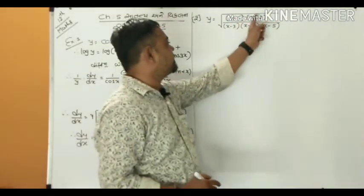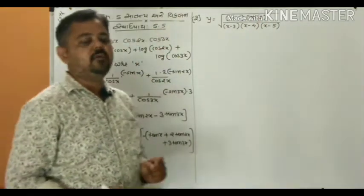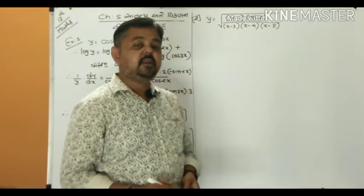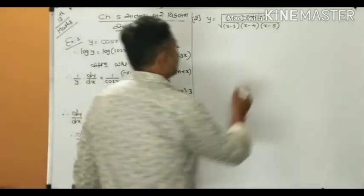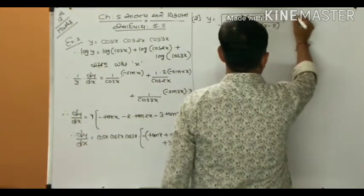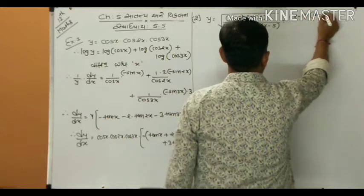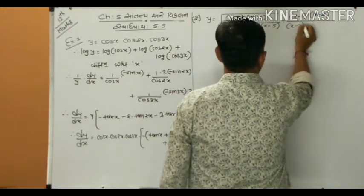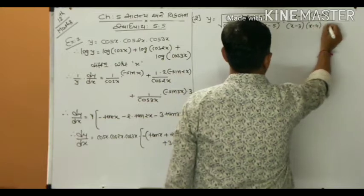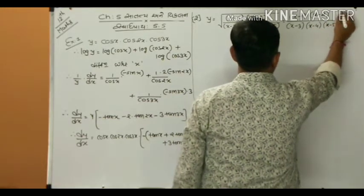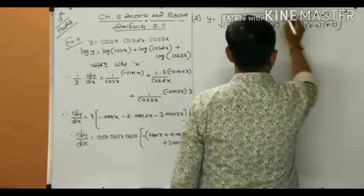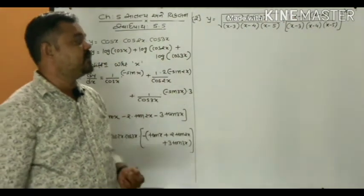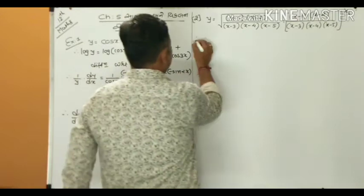Next, example number 2: y = √[(x−1)(x−2) / ((x−3)(x−4)(x−5))]. We first rewrite this as [(x−1)(x−2) / ((x−3)(x−4)(x−5))]^(1/2). Since there is a square root, we write it as raised to 1/2.